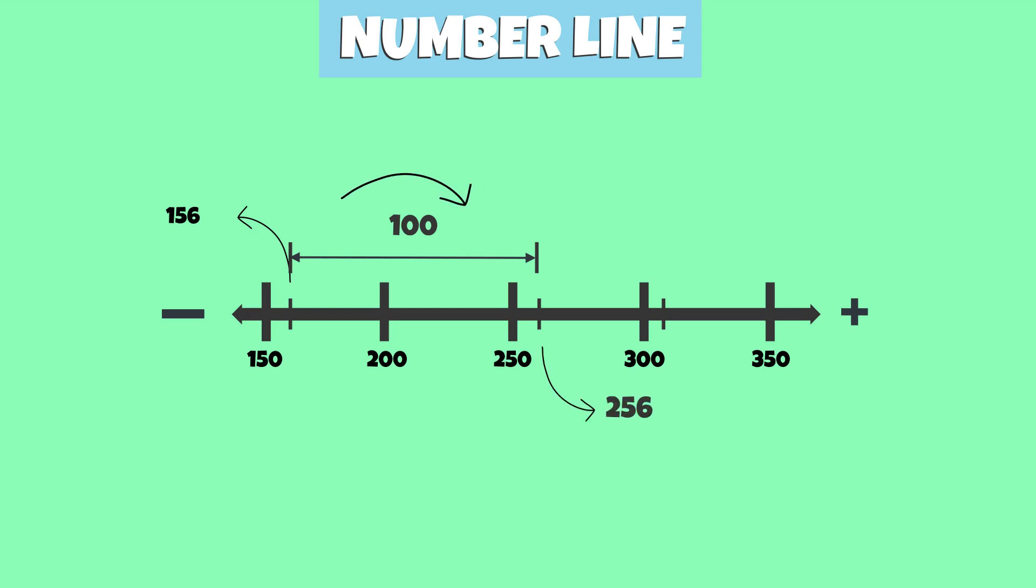We're now at 256. The final step is to move 50 units to the right. 256 plus 50 is equal to 306.